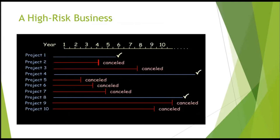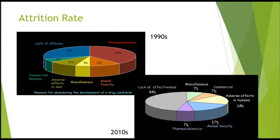Drug discovery and development is a high-risk business. On average, 7 of 10 projects are cancelled prematurely. What are the reasons drugs do not succeed? The main reason is lack of efficacy or effectiveness — meaning the drug is effective on animals and animal models, but when administered to humans, the therapeutic effect is absent or negligibly small.